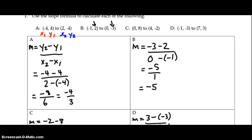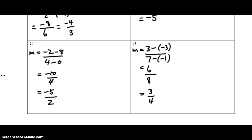All right welcome back. If you've completed C and D you should have the slope negative 5/2 for C and positive 3/4 for D.